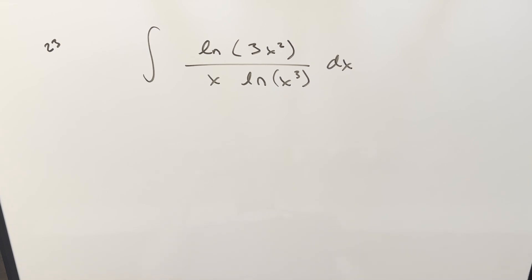Okay, we have a very quick integral from the Columbia Integration B 2023, number 23. We have the integral of natural log of 3x squared over x natural log of x cubed dx.